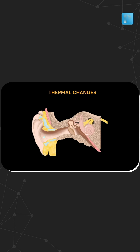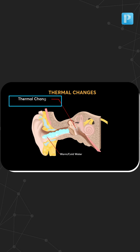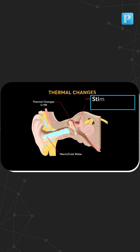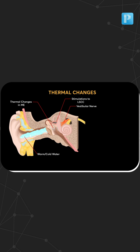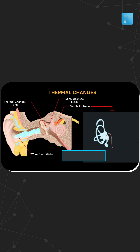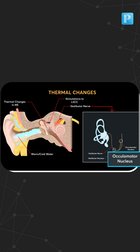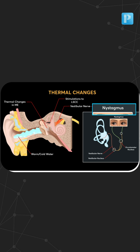When irrigating the external ear with warm or cold water, the temperature changes are transmitted to the middle ear by the process of convection. From there, the temperature changes stimulate the lateral semicircular canal. Once stimulated, impulses are carried by the vestibular nerve to the vestibular nucleus in the brain stem, and from there to the oculomotor nucleus, causing nystagmus.